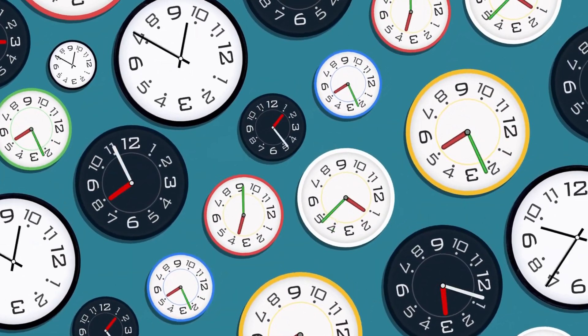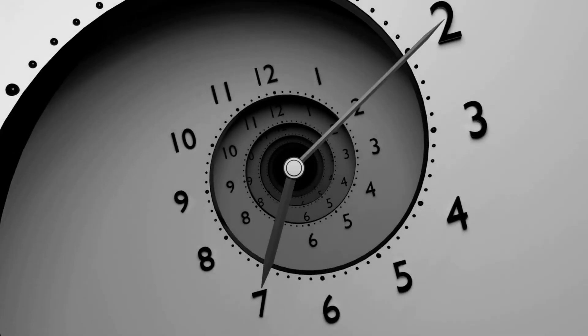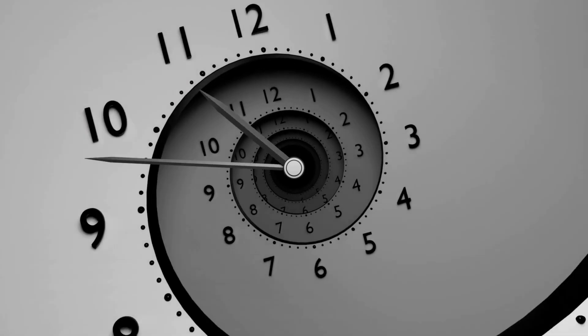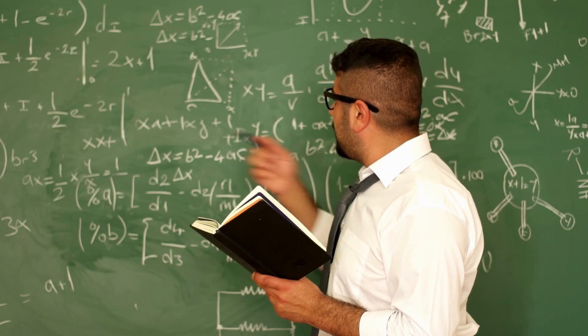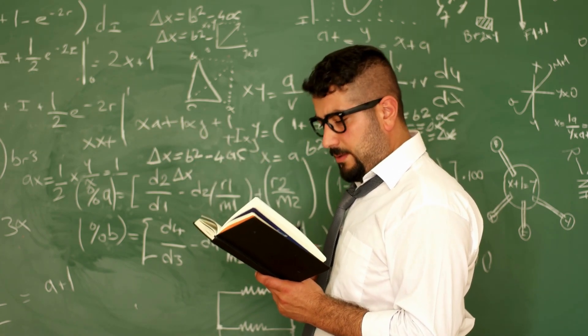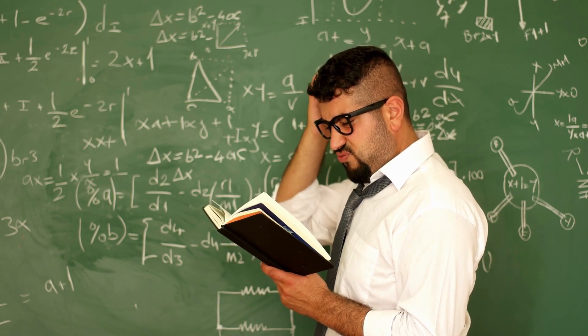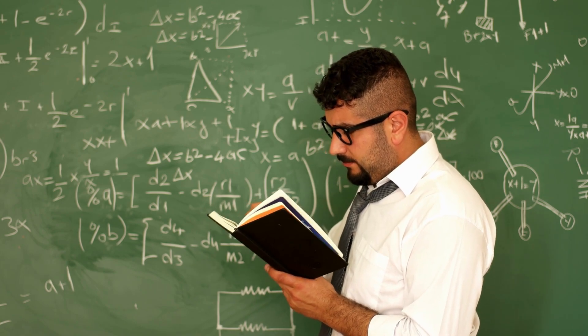By traversing a wormhole, one could potentially travel through time. To understand a time machine, let's delve into the realm of theoretical physics. Time is a fundamental dimension intricately intertwined with space, forming what we refer to as spacetime. There are several theoretical approaches that scientists have proposed. One notable concept involves manipulating the fabric of spacetime itself — specifically bending or warping it to create a pathway that allows for temporal travel.